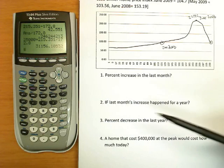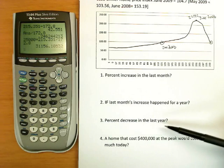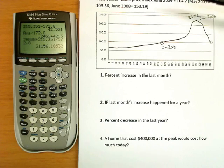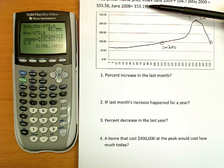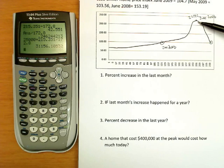Percent increase in the last month. If last month's increase happened for a year, what would that percent increase be for an entire year? And what's the percent decrease in the last year? So I've given you for reference the number June of 2008 was 153.19. A home that costs $400,000 at the peak, right here at $227.42 on the index, how much would it cost today? So I suggest you hit pause and work these questions if possible and do your best effort and then we'll go over them together.